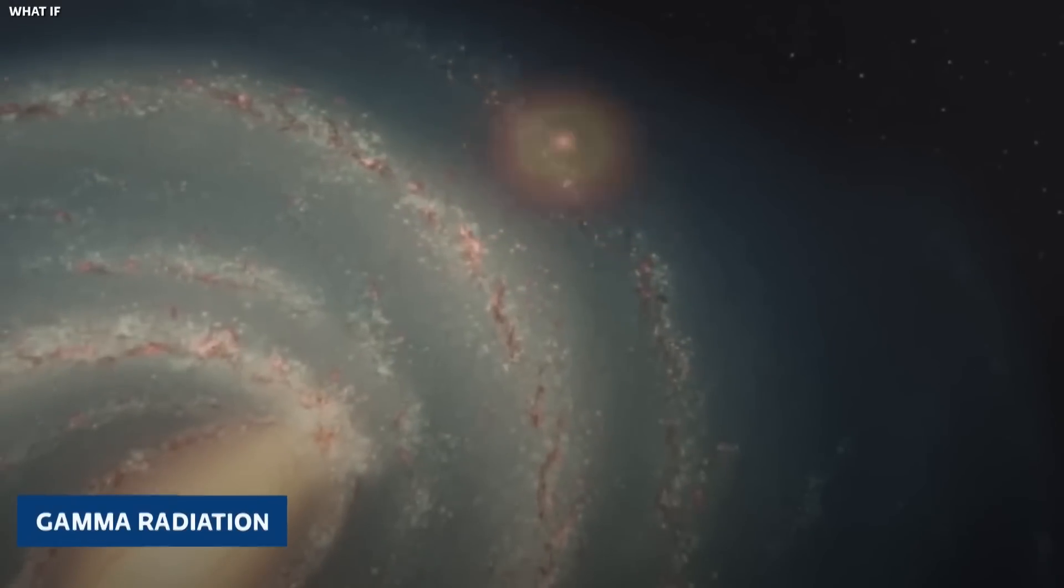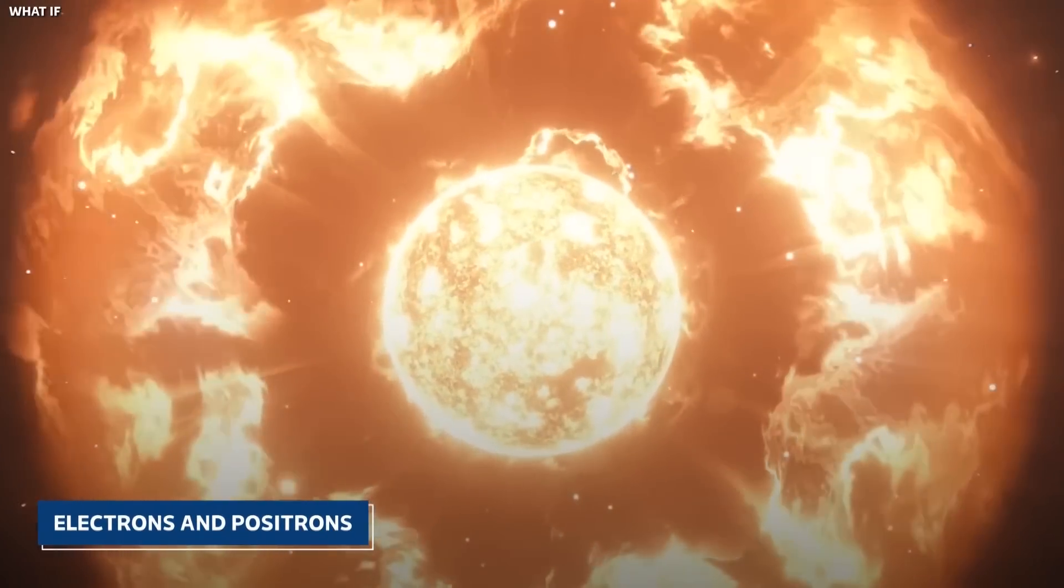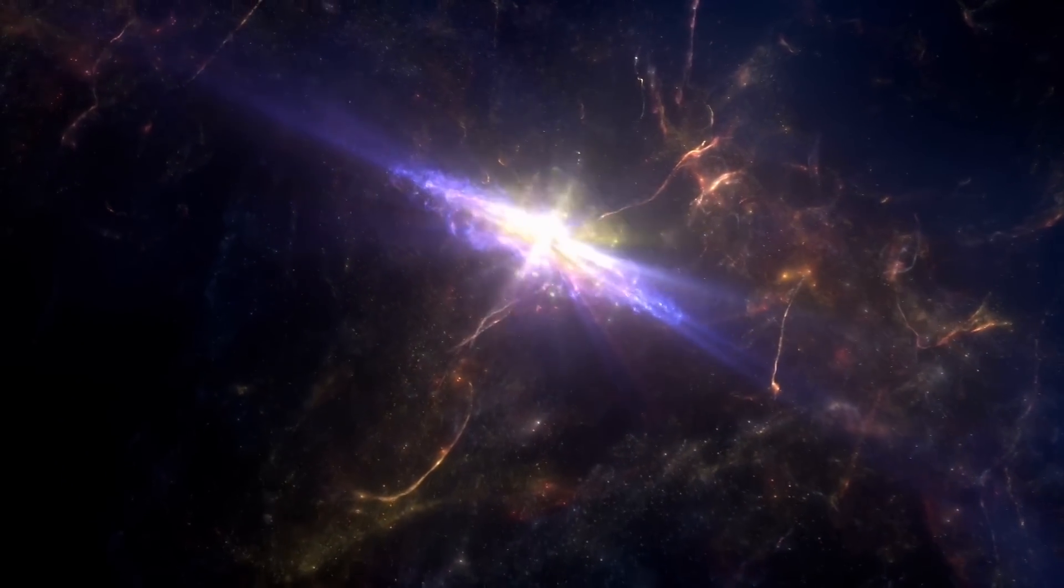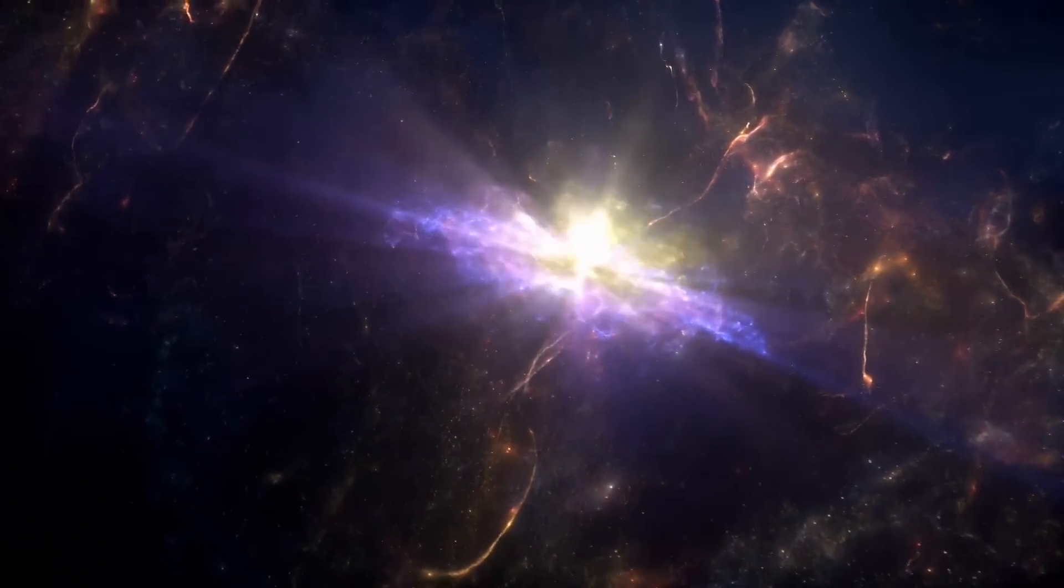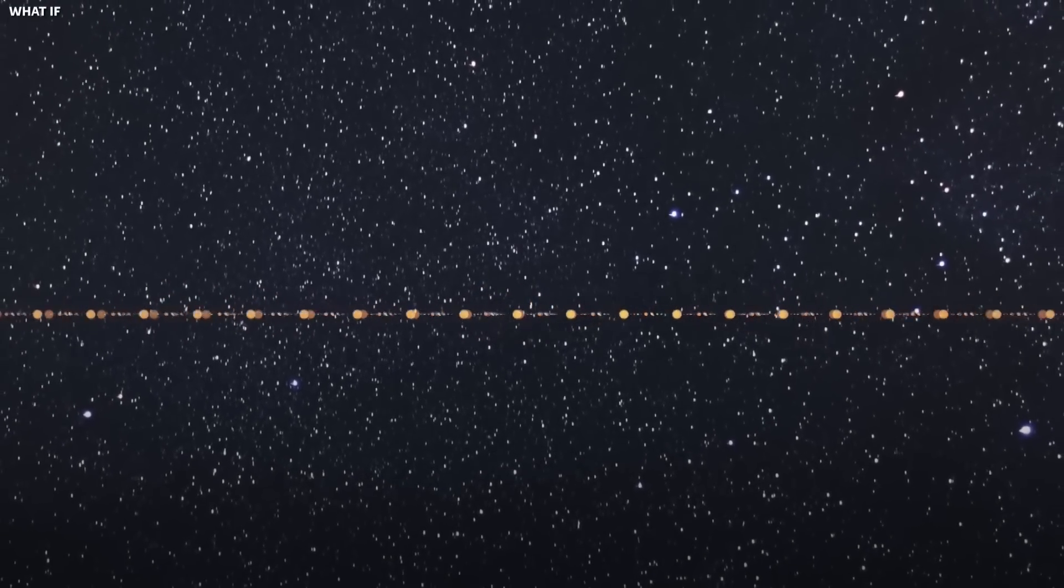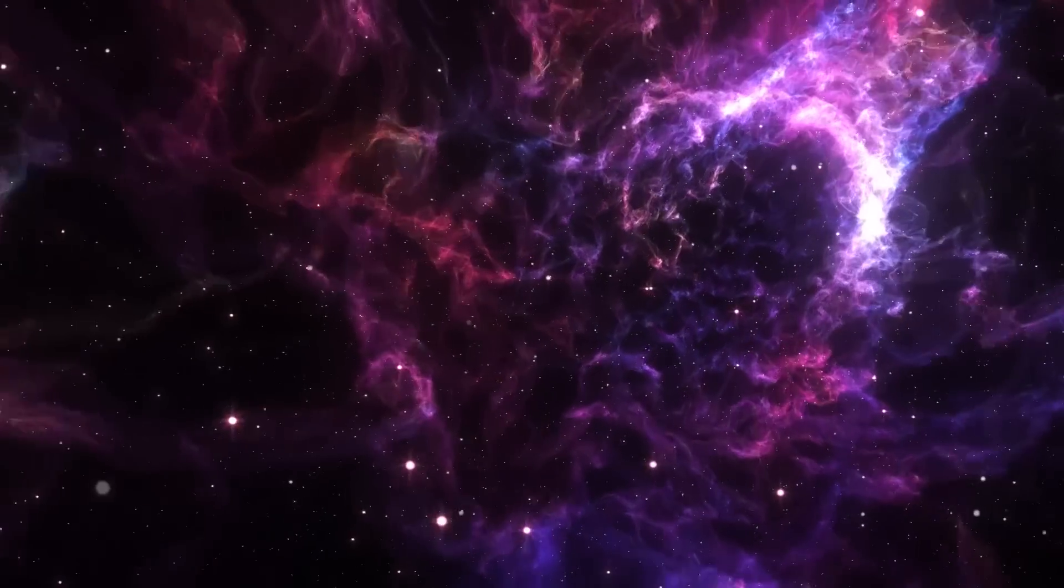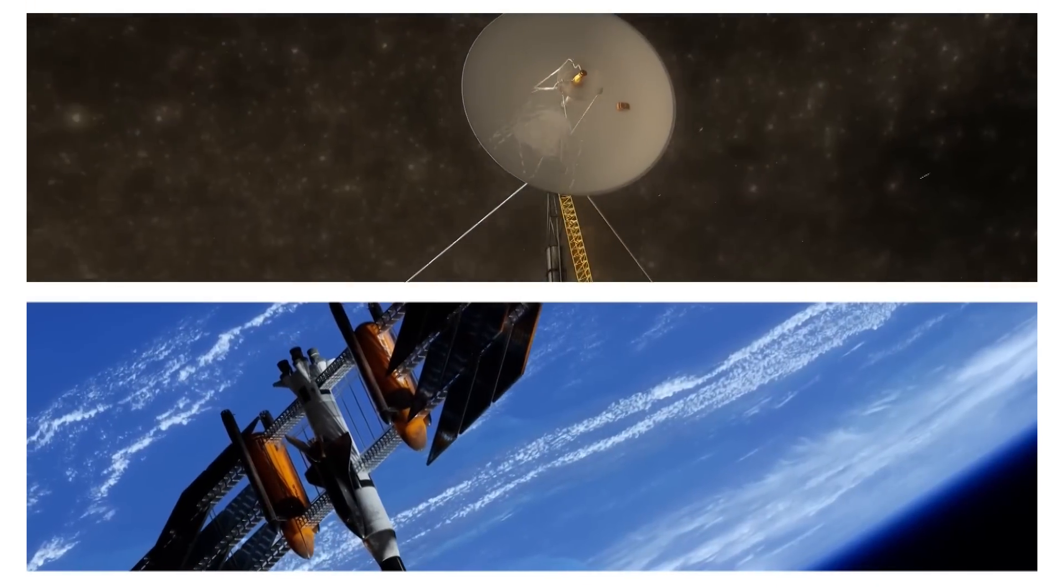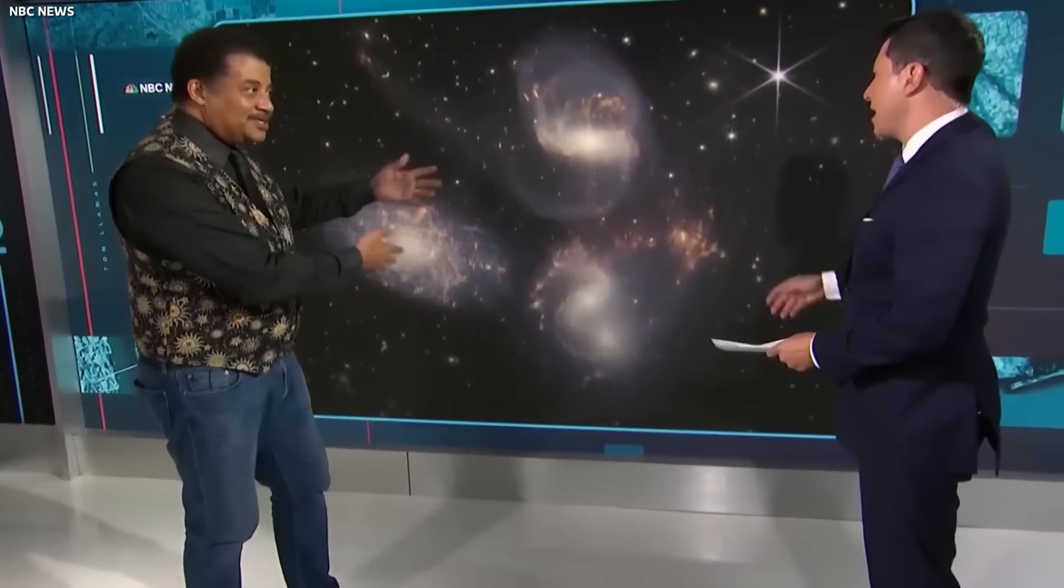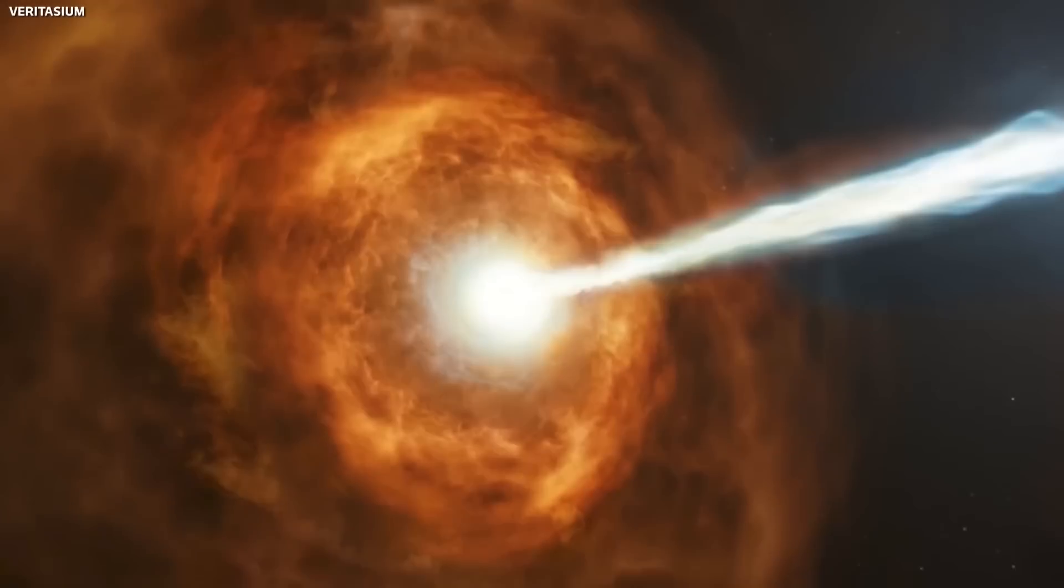The explosion would also release a vast amount of gamma radiation, the most energetic form of electromagnetic radiation. Gamma rays, due to their high energy, can interact with other particles and produce pairs of electrons and positrons. While the bulk of this radiation would be absorbed by the interstellar medium, some of it might reach our solar system. However, given Betelgeuse's distance from Earth, this radiation would not pose a direct threat to our planet. Instead, it would add to the background gamma radiation that our satellites and space telescopes detect, providing valuable data for astrophysicists studying high-energy processes in the universe.